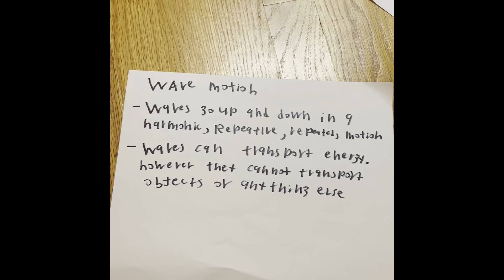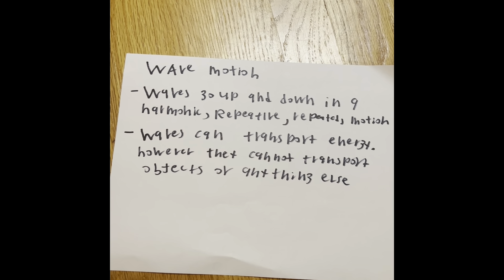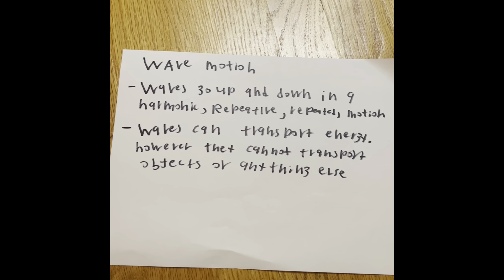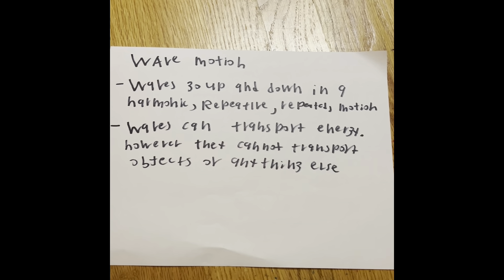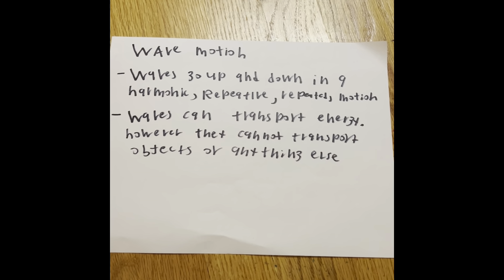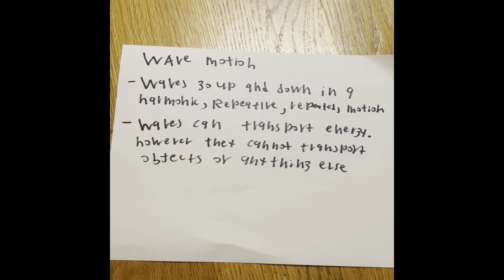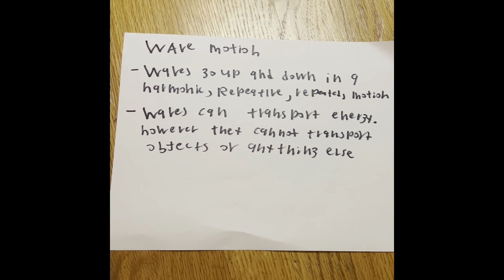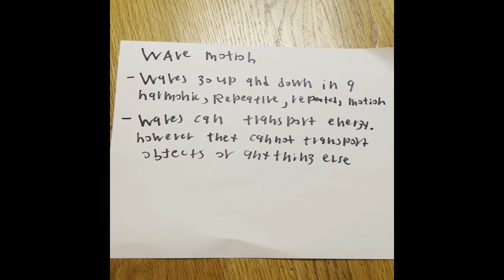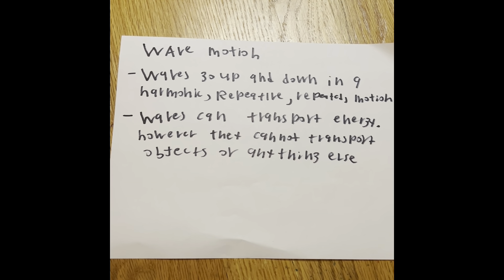So, a wave in physics — the definition is: waves go up and down in a harmonic repetitive motion. A harmonic motion happens when something repetitively does an action, like a pendulum or a spring. Waves can transport energy; however, they cannot transport objects or anything else.